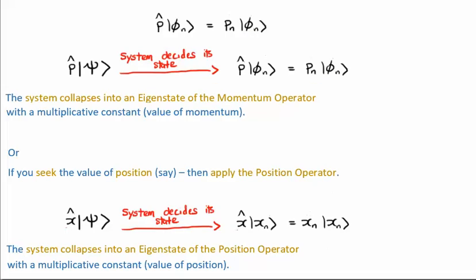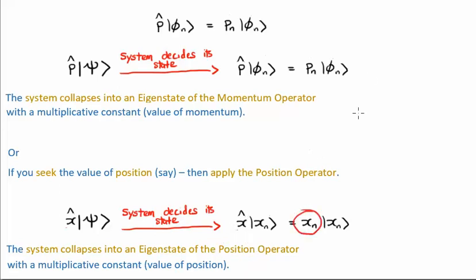A very similar, in fact analogous, thing happens if you want to find out the value of position using the position operator. Once again, the system collapses into an eigenstate — in this case of the position operator — with a multiplicative constant known as the value of position, x sub n.